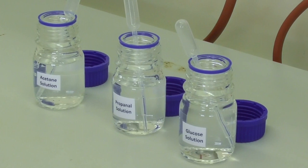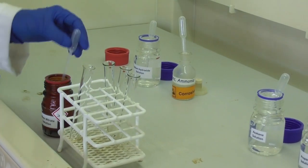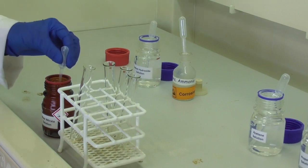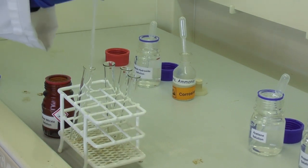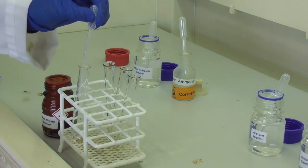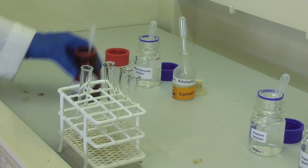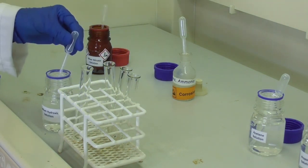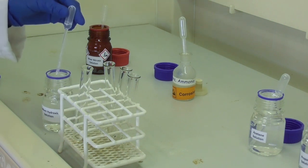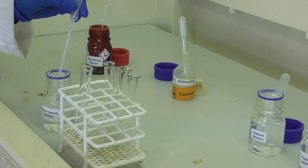All the reagents for the tolerance test are set up in the fume hood. We begin by adding one milliliter of silver nitrate into a test tube. Next we add one milliliter of sodium hydroxide solution into the same test tube.